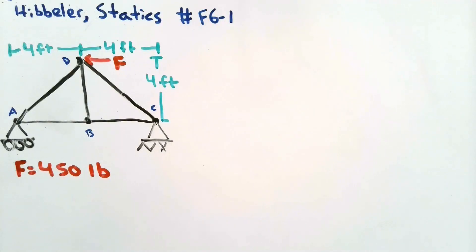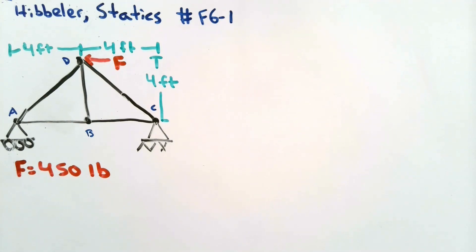This is problem F6-1 from Hibbler's textbook, version 14. In this problem, we're going to look at the method of joints.